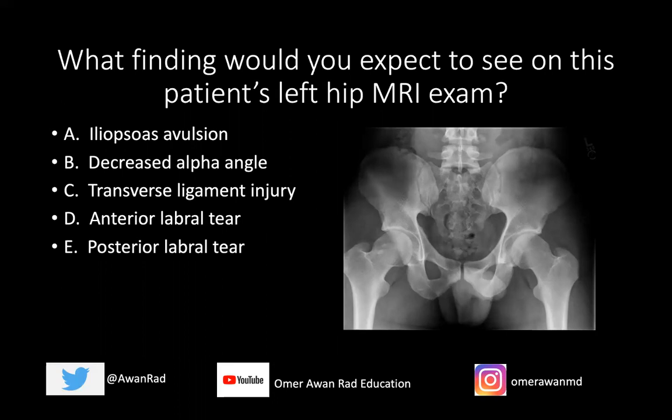Would you expect to see an iliopsoas avulsion, decreased alpha angle, transverse ligament injury, anterior labral tear, or a posterior labral tear? What finding would you expect to see on the patient's left hip MRI examination? And of course, the answer here is going to be an anterior labral tear.